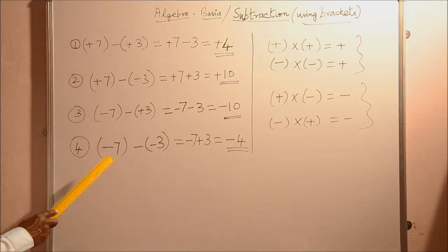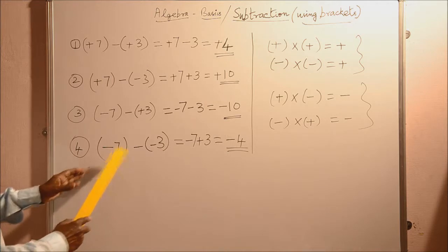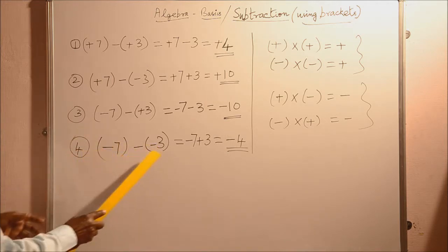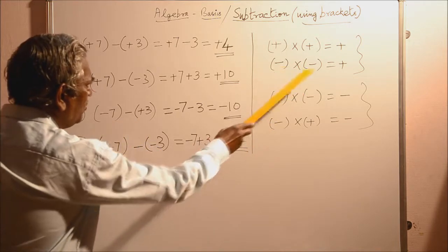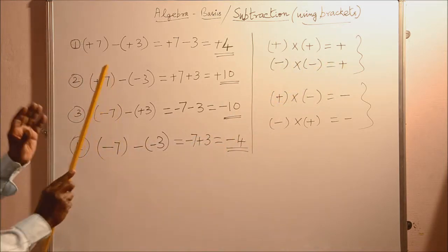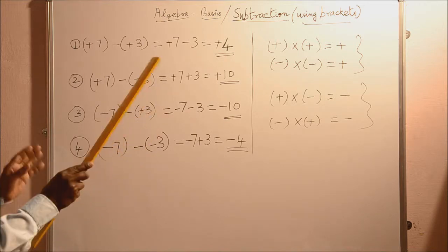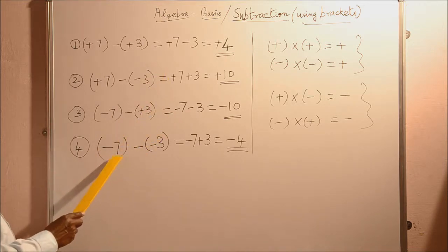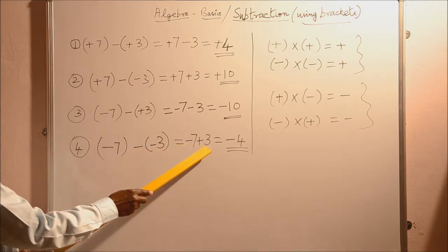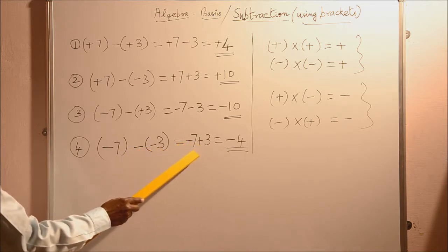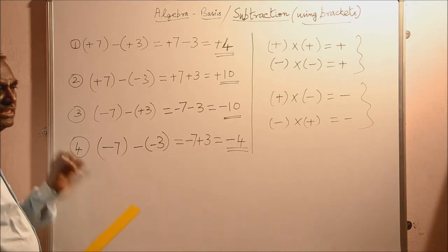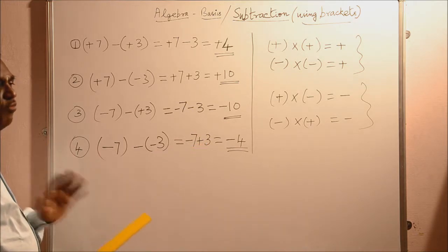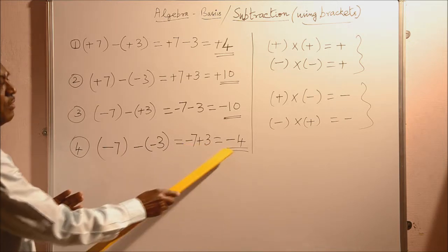In the fourth sum, you are subtracting minus 3 from minus 7. Putting these two numbers within brackets, when you remove the bracket, that becomes minus into minus. Minus into minus gives you plus — when you multiply the same signs, you always get plus only. So minus 7 minus of minus 3 becomes plus 3. Minus 7 plus 3: different signs, so find the difference between 7 and 3, which is 4. The bigger number has the sign minus, therefore minus 4.